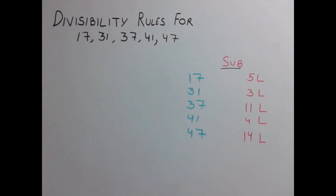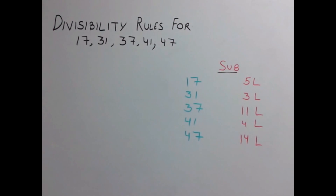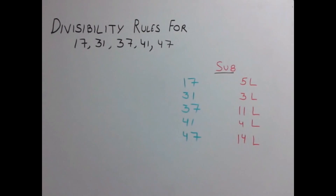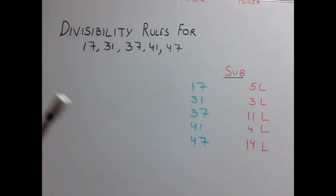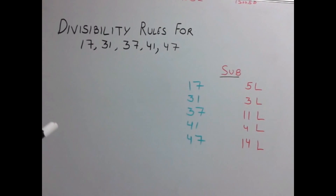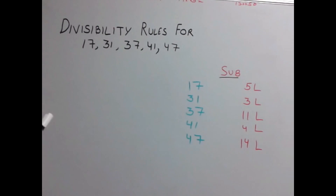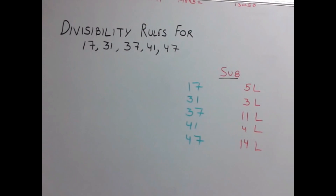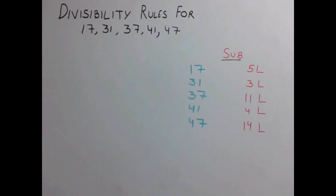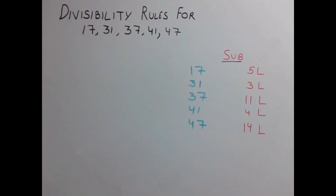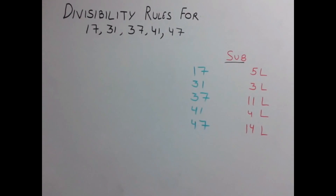Just keep in mind: in the previous series we multiplied the last digit by a number and added it to the remaining number. In this series, we would be subtracting instead. Let's have an example.